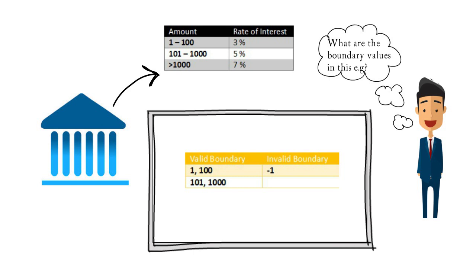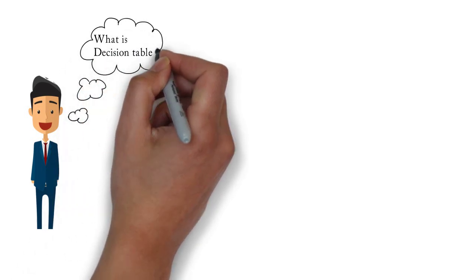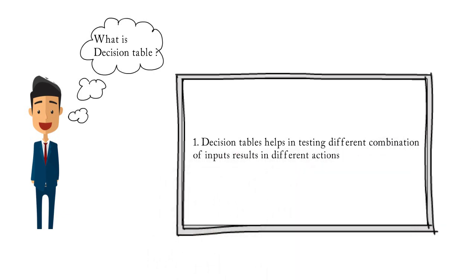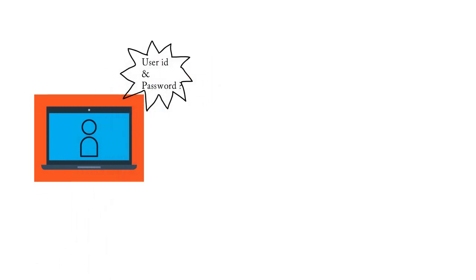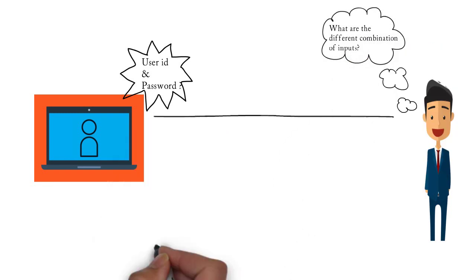There is always a high chance of finding bugs at the boundaries, so boundary value analysis helps in finding bugs very easily. The next test design technique is decision table. Decision table helps in testing different combinations of inputs that result in different actions. When we try to log in to a banking website or online shopping website, we are asked to enter a user ID and password — user authentication scenarios can be tested with the help of a decision table.